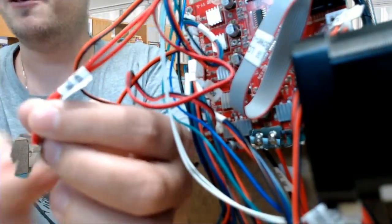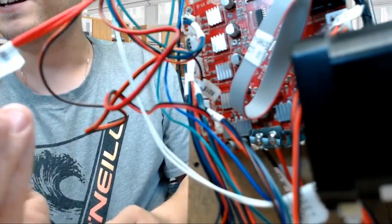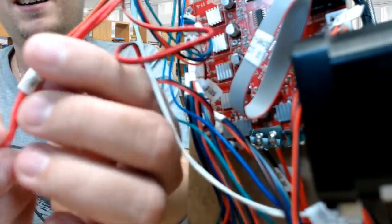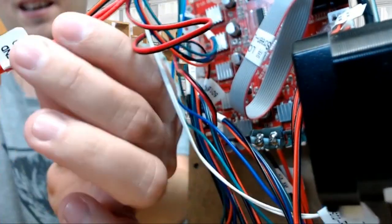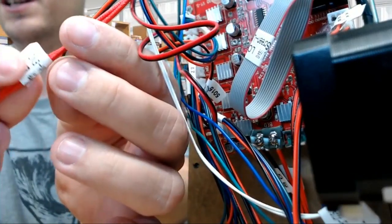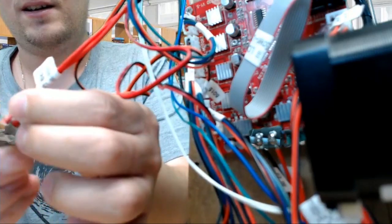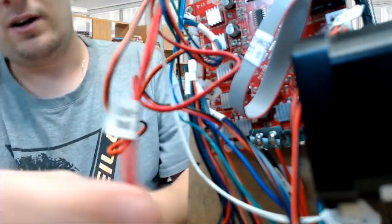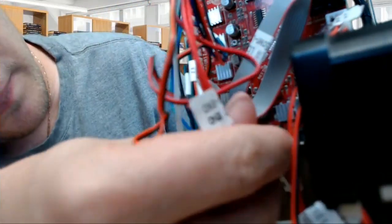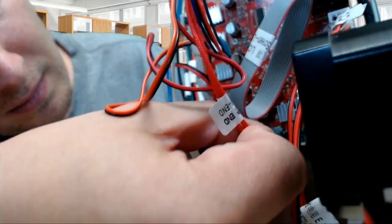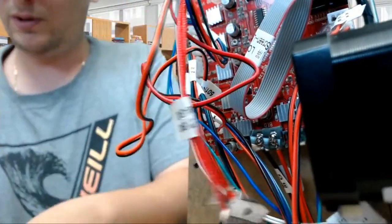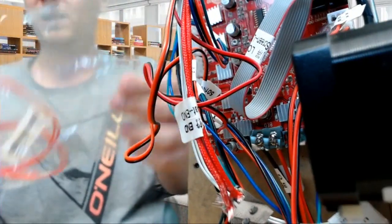It should say extruder heat end. Remove this wire from the control board panel, and now we will put the new wire inside.